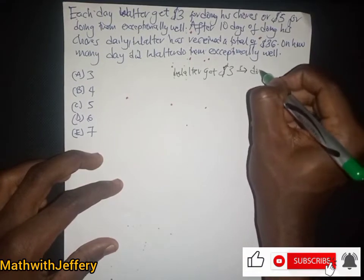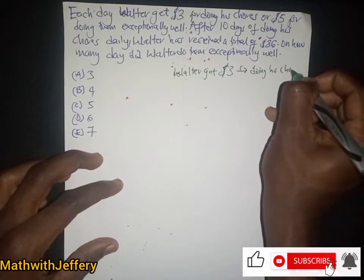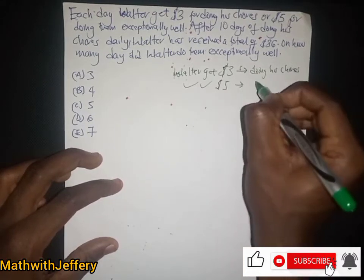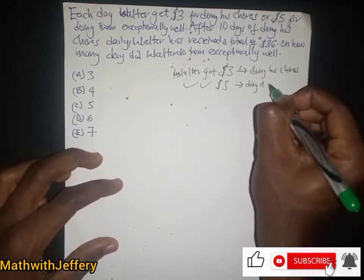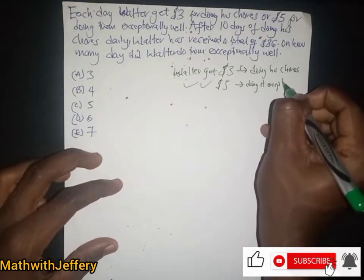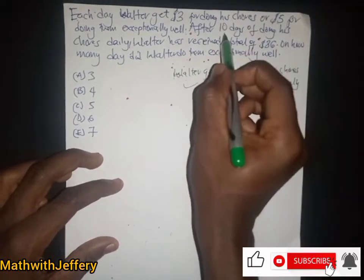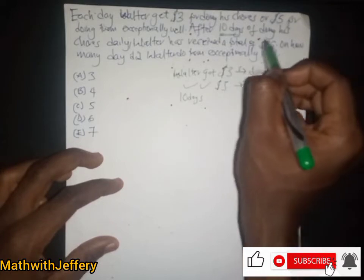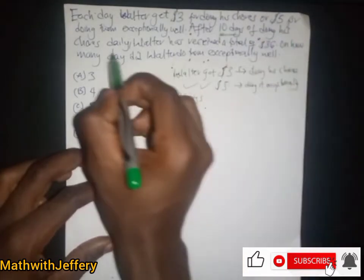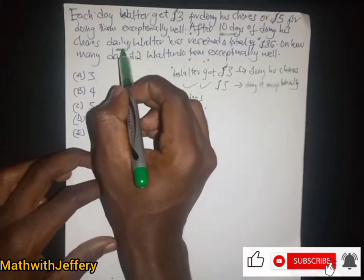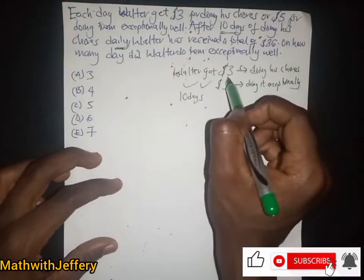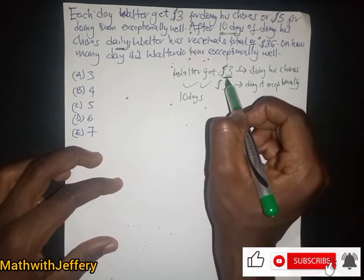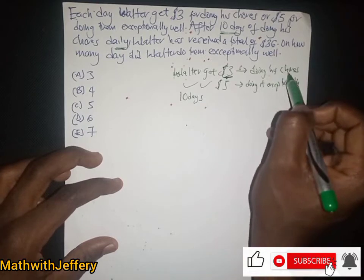Water also gets five dollars for doing them exceptionally well. Now after 10 days of doing their chores daily, Water is going to receive three dollars for doing them daily, but we don't know whether they are doing the chores normally or exceptionally.